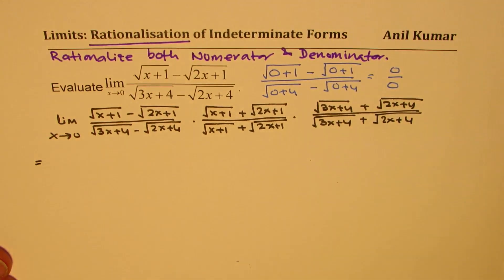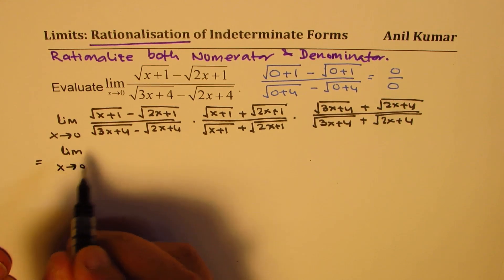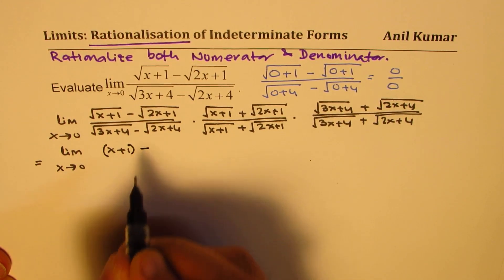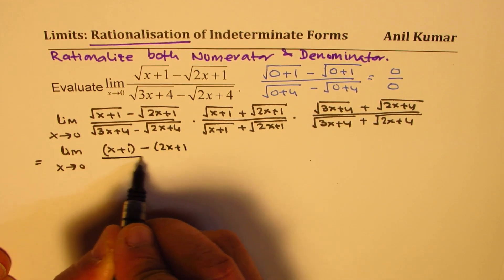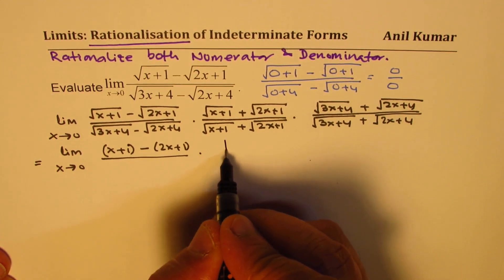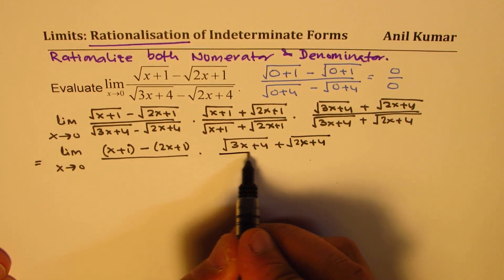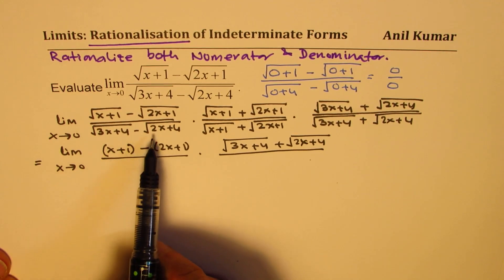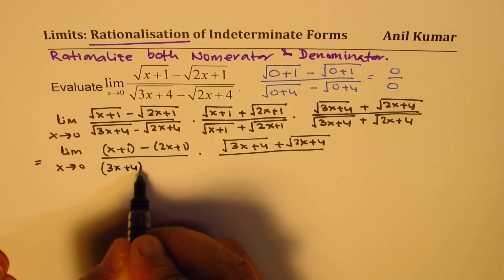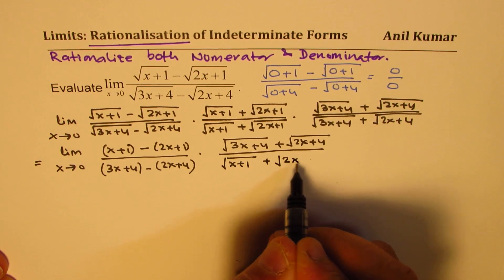Once you do that, in the numerator, when I multiply these two terms, we get a difference of squares: square root of (x plus 1) squared gives just (x plus 1), minus (2x plus 1). And here we are left with the term square root of (3x plus 4) plus square root of (2x plus 4). In the denominator, rationalizing by multiplying those two terms gives the difference of squares: (3x plus 4) minus (2x plus 4), and what remains is square root of (x plus 1) plus square root of (2x plus 1).